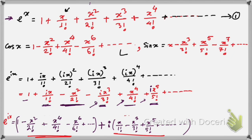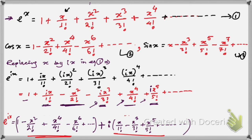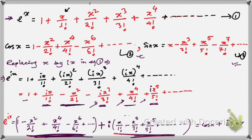Let me take the expansion as equation 1, the cos x series as equation 2, and the sin x series as equation 3. Here, what we have done is replace x by ix in equation 1, obtaining the expanded form. Using equation 2, the real series is replaced by cos x, and using equation 3, the imaginary series is replaced by sin x, giving e to the power ix equals cos x plus i sin x.